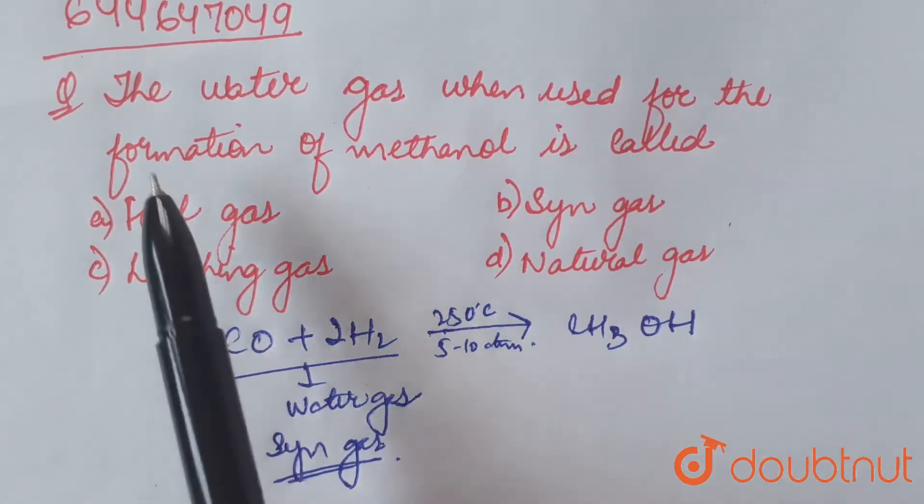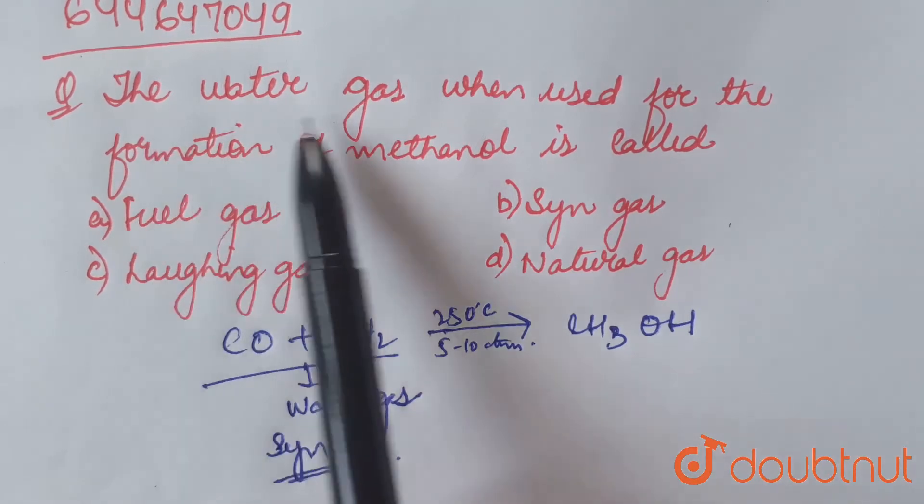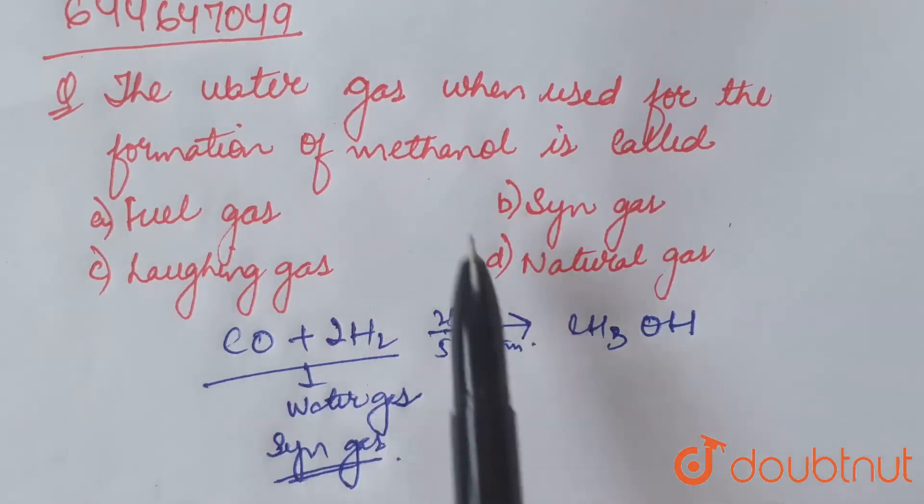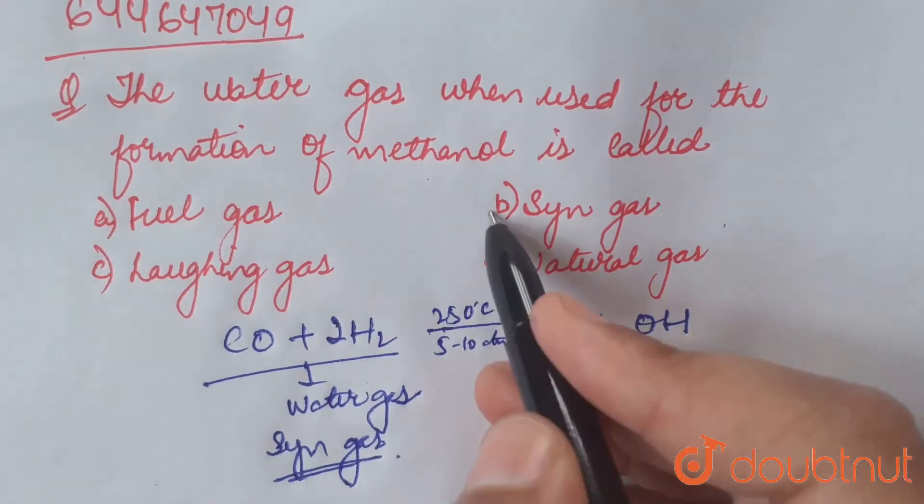Hence, the correct option for the given question — the water gas when used for the formation of methanol is called — is option B: thin gas.